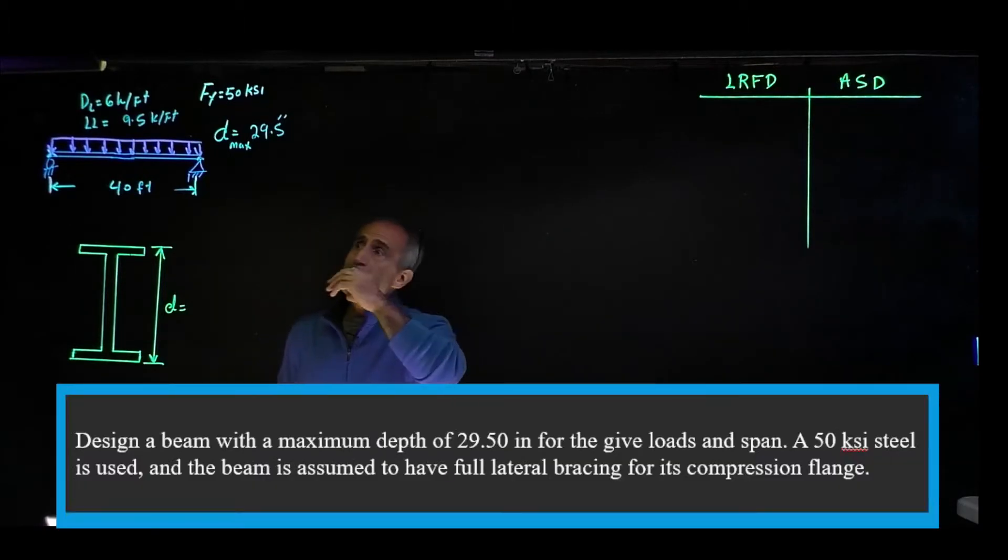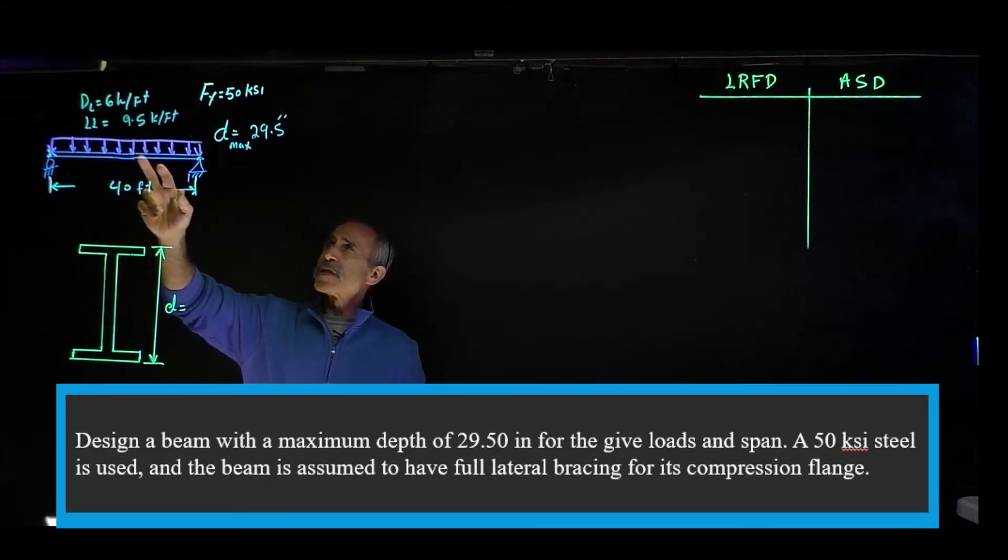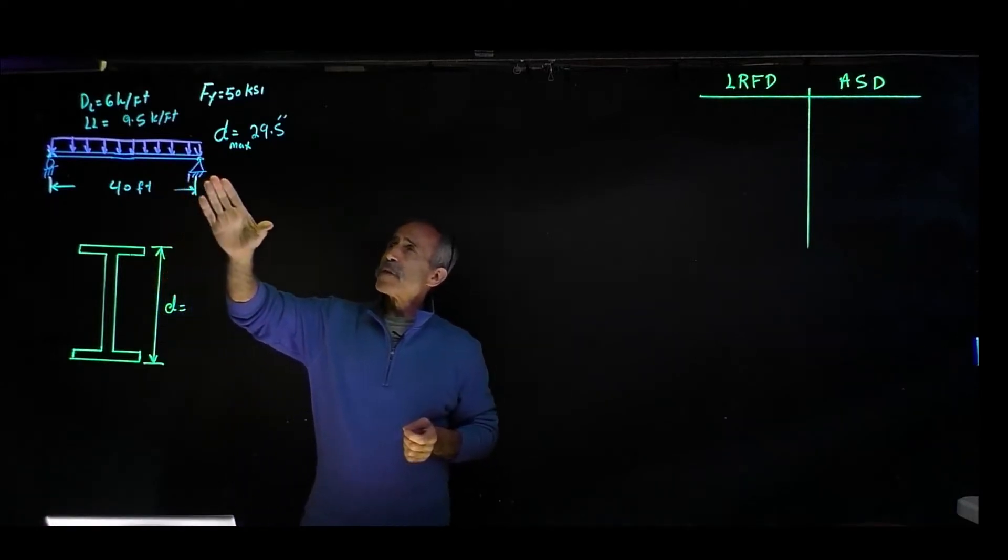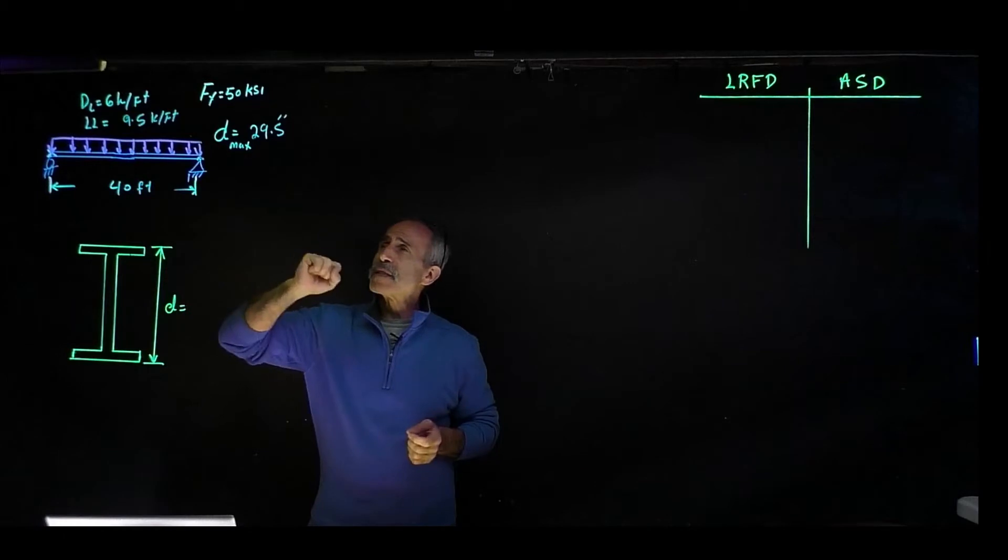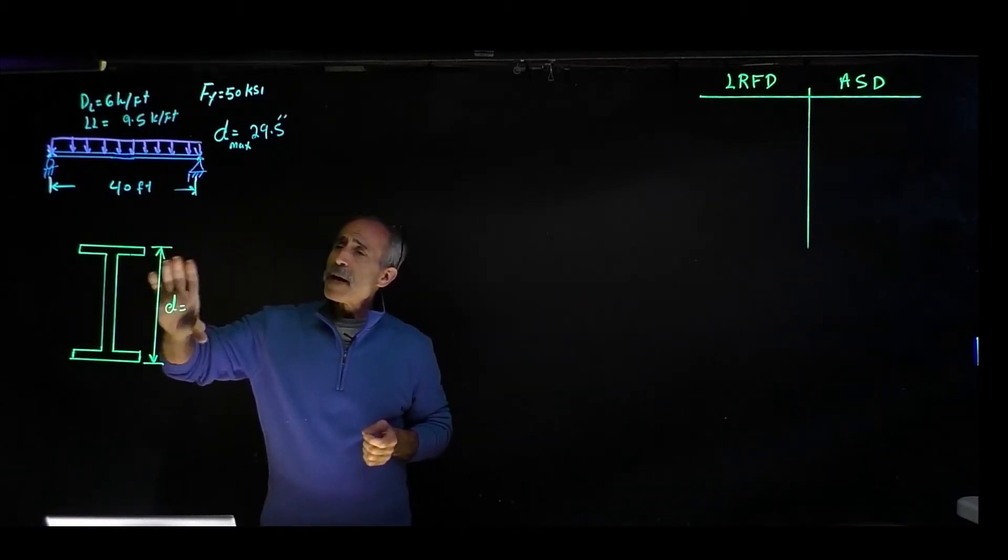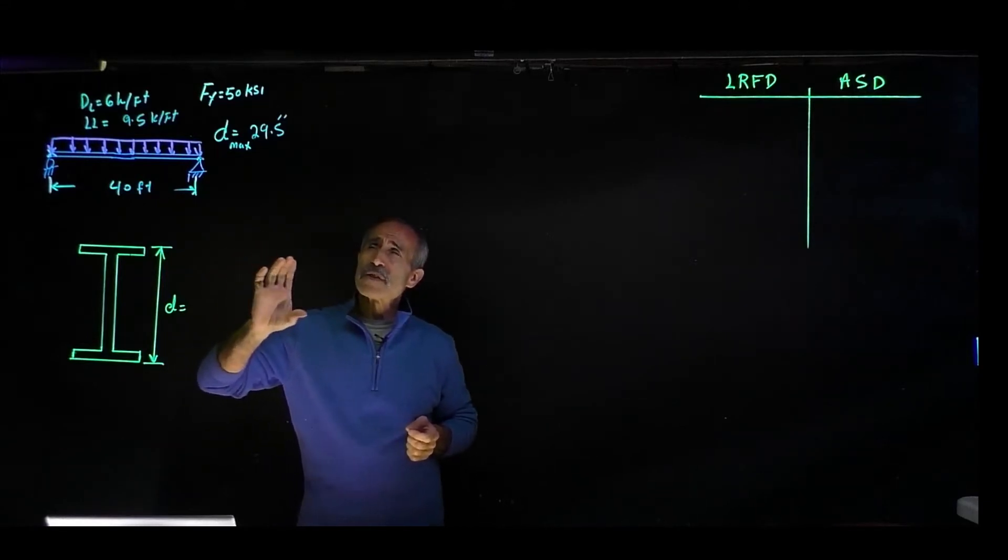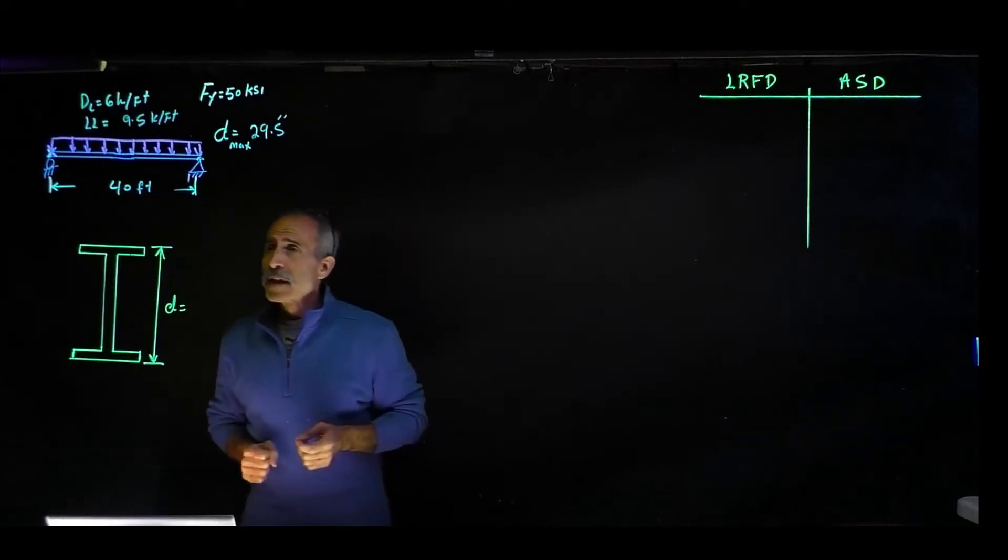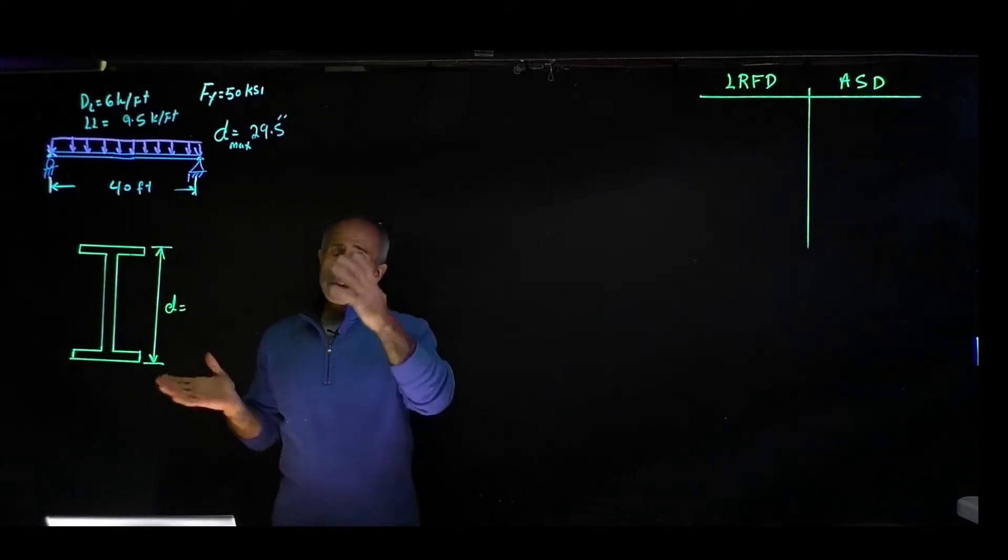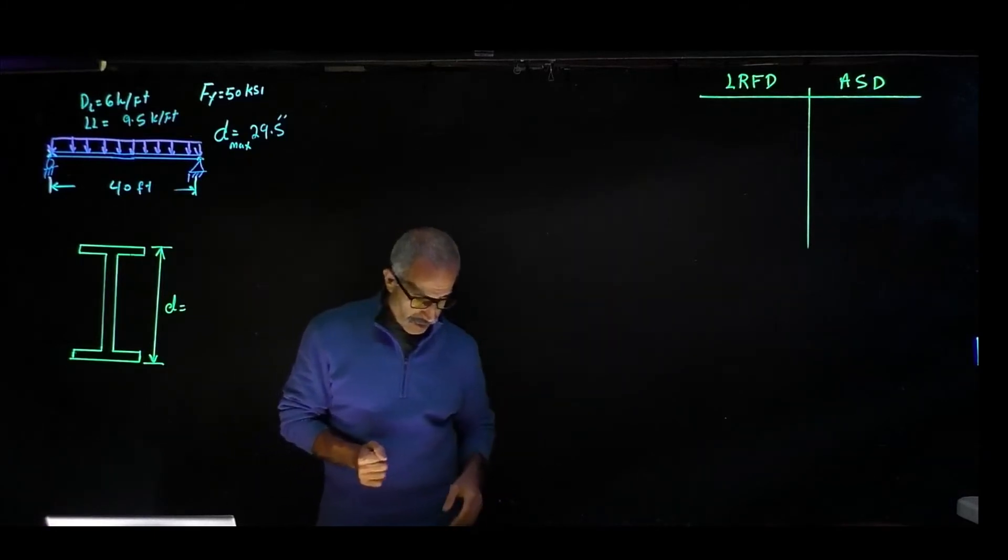We've got this problem here. We've got this beam, about 40 feet long. You have a dead load of 6 kip per foot, live load of 9.5 kip per foot. It's a 50 KSI steel. We are limited to maximum D to be 29.5 inches. We're going to use both allowable stress design and load resistant factor.